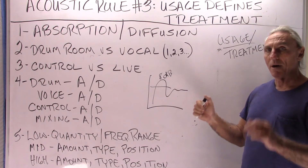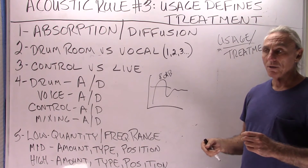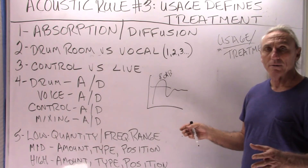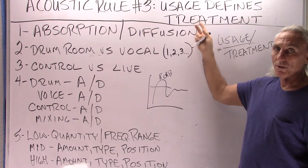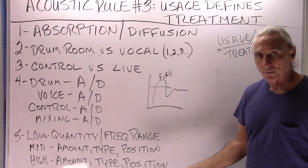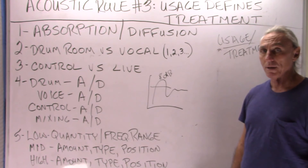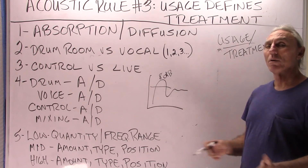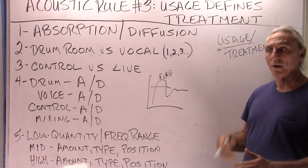For middle frequencies, it's all about what type of absorption and diffusion you're going to use. Are you going to use broadband absorption? Are you going to use a lower-octave diffusion sequence? It all depends on room usage and what you're trying to accomplish. For high frequencies, it's always about how much absorption and diffusion to use, what type, and more importantly where you put it — because the microphone hears things our ears don't. Whether it's a live recording situation or a playback, mixing, monitoring, or mastering situation, it's different.